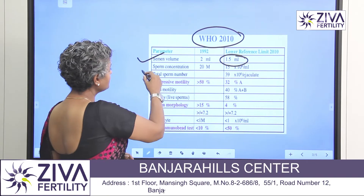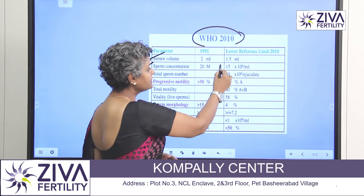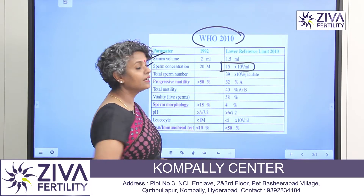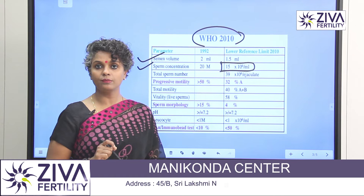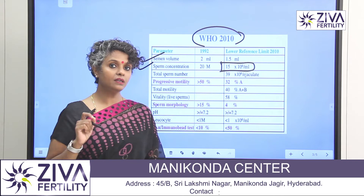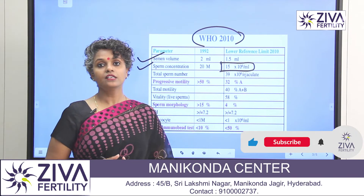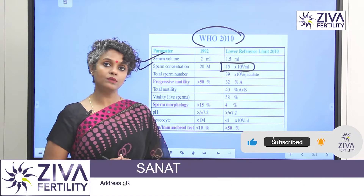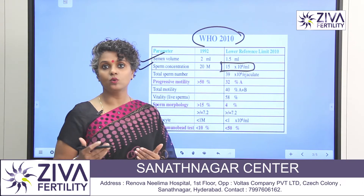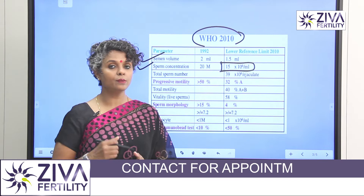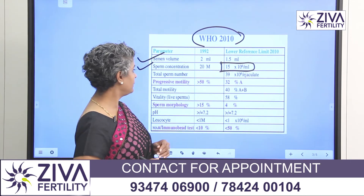Now, sperm concentration. Sperm concentration should be at least 15 million per ml — meaning in each milliliter of the semen sample, at least 15 million sperms should be present. Anything less than that is called an abnormal sample and is termed oligozoospermia. So remember, oligo means less than 15 million per ml.